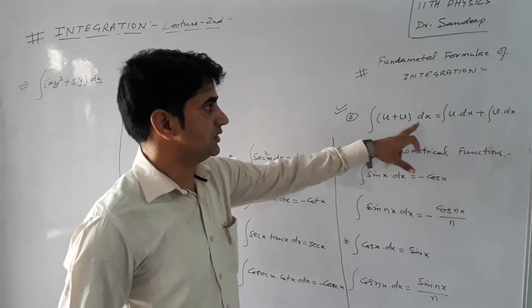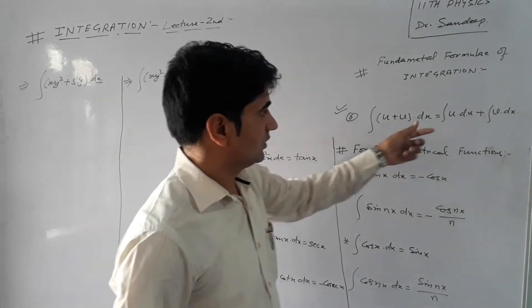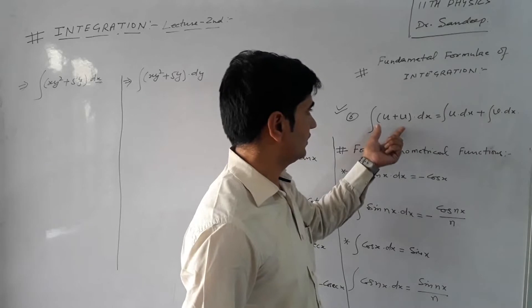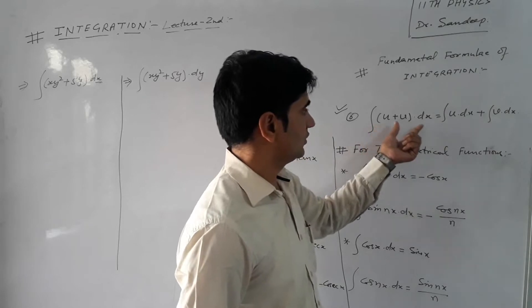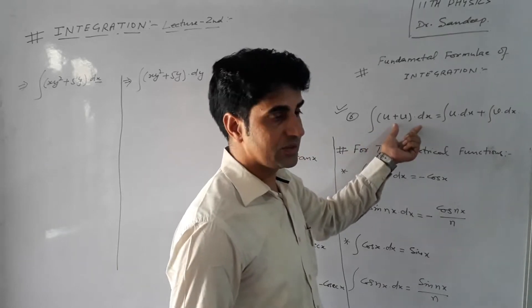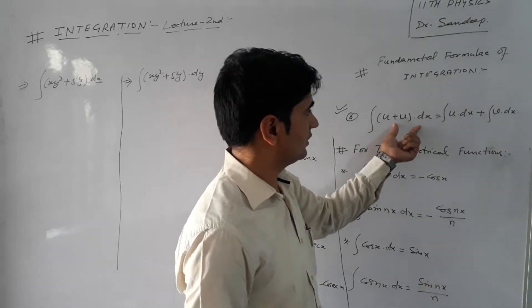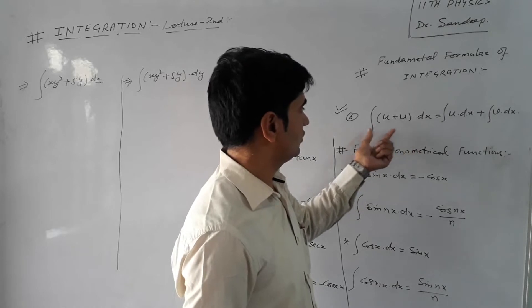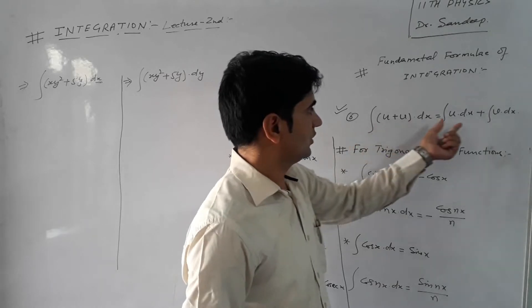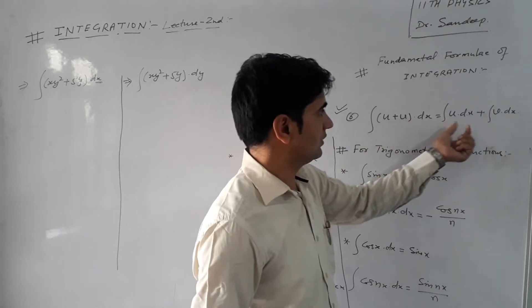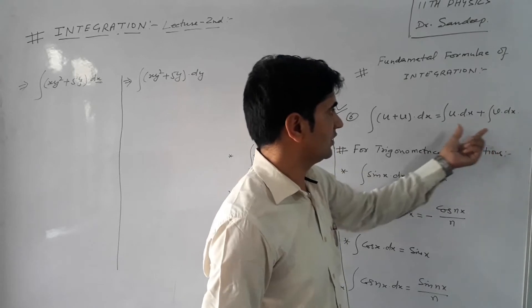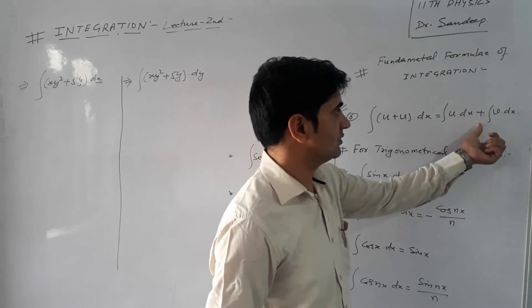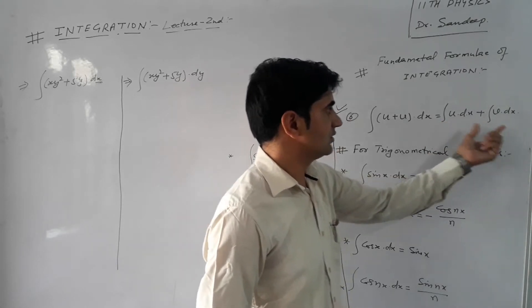The identity is the integral of (u plus v) into dx, where u and v are different values. So, if we have different values, we will apply the integral operator on u and v differently — that will be the integral of u into dx, plus or minus the integral of v into dx.